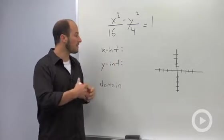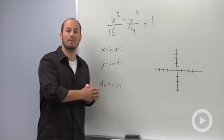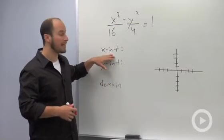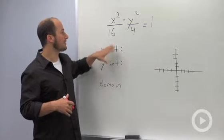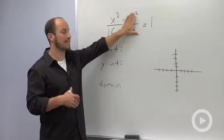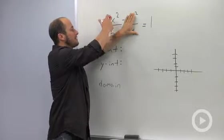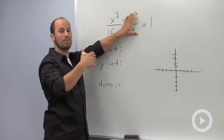What I want to do is just look at a couple key things that we know how to figure out, and then we'll talk more about the graph. To find the x-intercept, we let y equal 0. This term disappears, and we're left with x squared over 16 is equal to 1. So x squared over 16 equals 1, which means x has to be plus or minus 4.